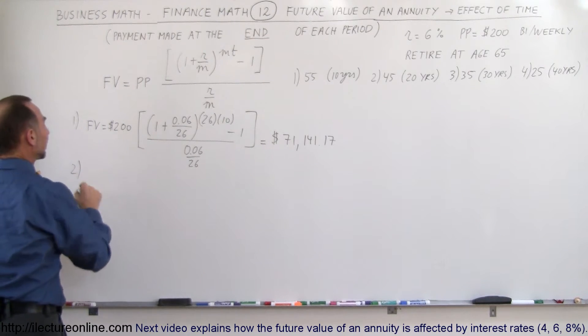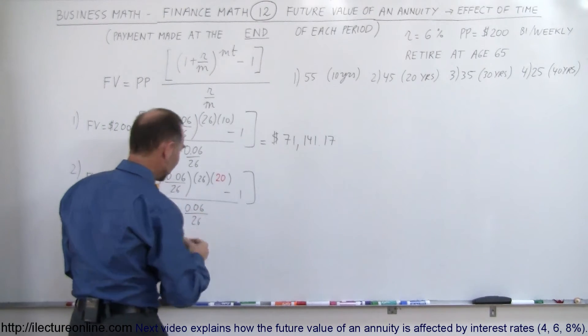In scenario 2, we're going to get the very same result, but instead of 10 years, we're going to have a 20-year period. Let's see how that changes things. The future value will be $200 times the quantity, 1 plus 0.06 divided by 26. The whole thing raised to 26 times, and I'll put that in red letters so you can see what has changed. This is going to be 20 years instead of 10 years. And then, everything else in the equation remains the same. Minus 1, and the whole thing divided by 0.06, divided by 26.